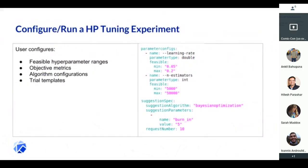CADIAP uses custom resources, which means you create a YAML file that describes your feasible ranges, what your metrics are, and the algorithm you want to use — in this case, Bayesian optimization. You also define what your trial templates look like, which is basically what your Kubernetes pods are going to look like. Then you just run kubectl apply.